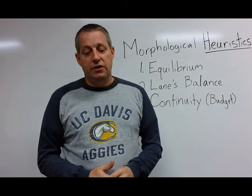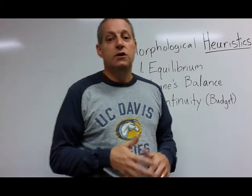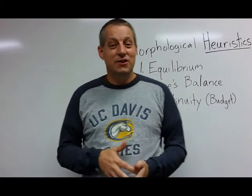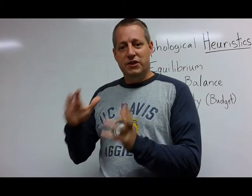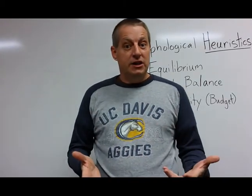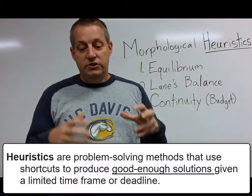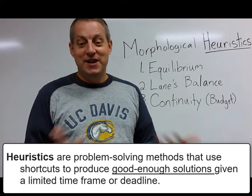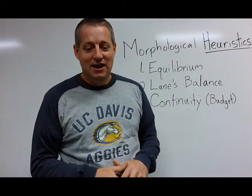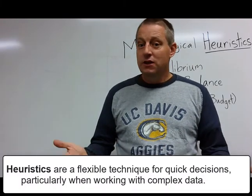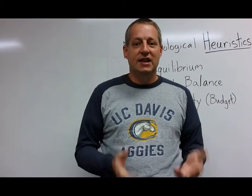The term the knowledge and learning literature uses to talk about transferable conceptual models is heuristics. The investing community uses heuristics quite a bit because they're really interested in simple conceptual models that can be used to make reliable decisions quickly and without a lot of information. Heuristics are described as a problem-solving method that uses shortcuts to produce good-enough solutions in a limited timeframe — which sounds like smart planning. Another definition is a flexible technique for quick decisions, particularly when working with complex data; a colloquial form is "rule of thumb."